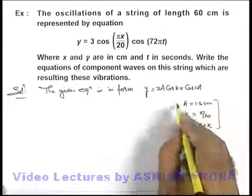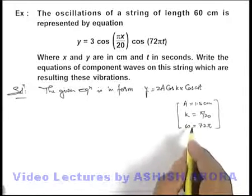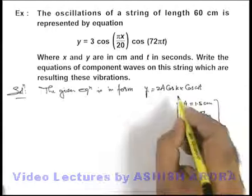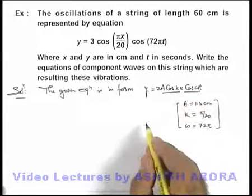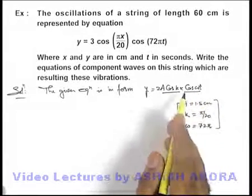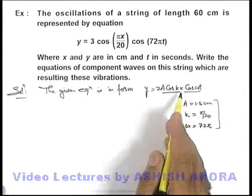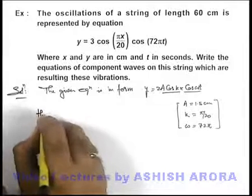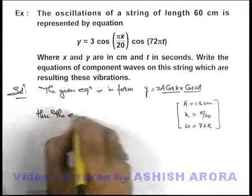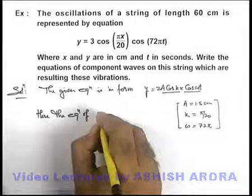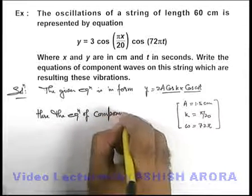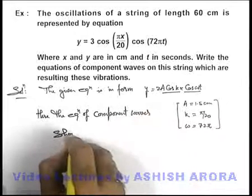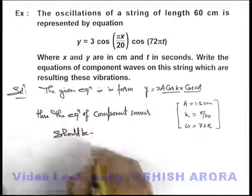Now if these parameters are known to us, we can easily write down the equations of component waves. As there are two cosine terms in product, which are generally the result of adding two cosine terms, we can say the equations of component waves should be given as follows.